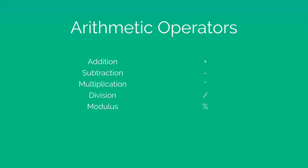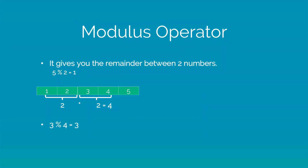Let's take a look at the Modulus in detail. Modulus gives you the remainder between two numbers, and the way you write it is 5 % 2. That simply means take the number 5, divide it by 2, whatever is the remainder — which happens to be 1 in this case — return that remainder.